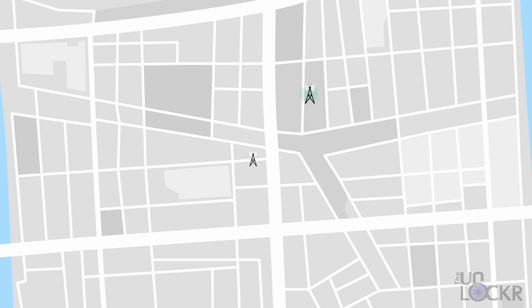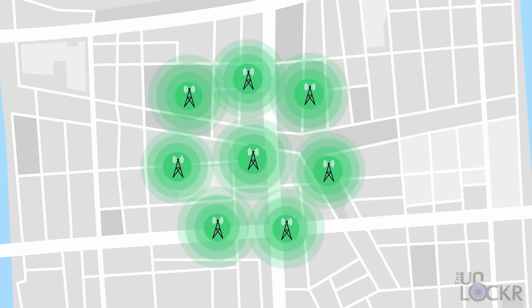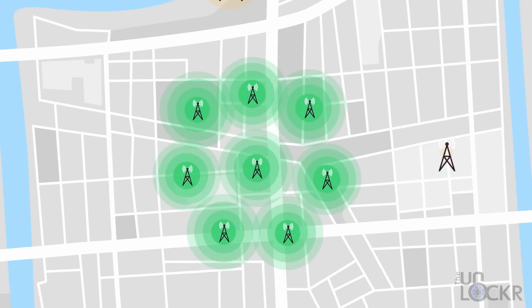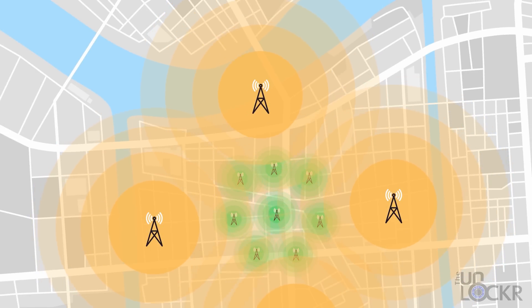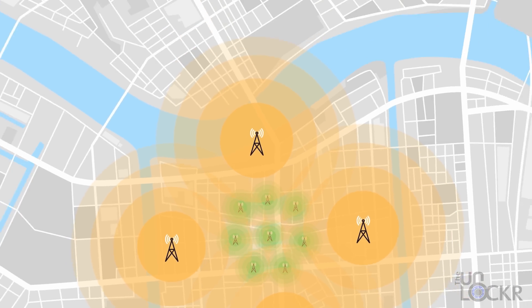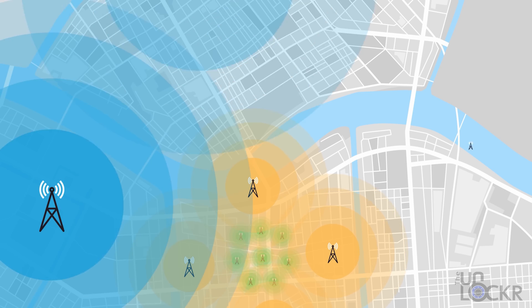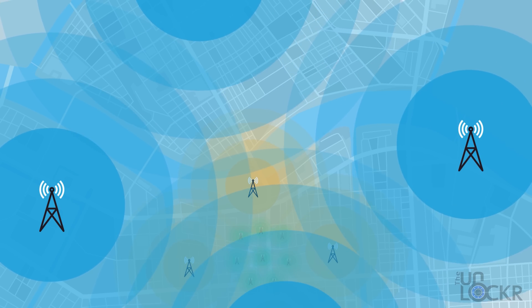You'll have millimeter wave in city centers and anywhere there's a dense amount of people, like stadiums, providing the fastest speeds. Then you'll have sub-6, C-band, and mid-band spreading from there to fill in the gaps and provide fast speeds further out. And then from there, you'll have low band beyond that. Your phone will just switch seamlessly between all of them.